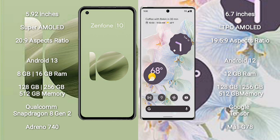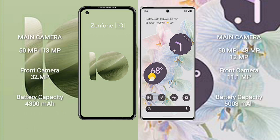Asus Zenfone 10 features the Qualcomm Snapdragon 8 Gen 2 processor and Adreno 740 GPU. Google Pixel 6 Pro comes with 12GB RAM and 128GB, 256GB, or 512GB internal storage, powered by the Google Tensor processor and Mali-G78 GPU. Asus Zenfone 10 has a dual rear camera setup of 50MP plus 13MP and a 32MP front camera.